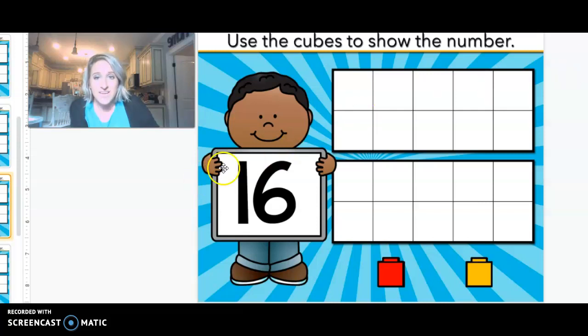It's a 1 right here and a 6. This little boy is holding a picture of a 1 and a 6, which is a 16. So we're going to count to 16 together. Ready?